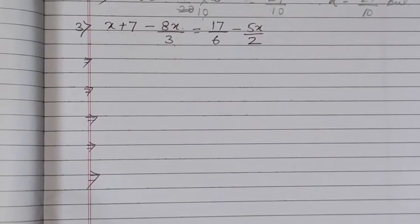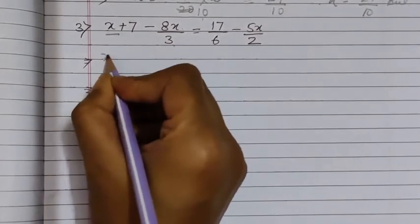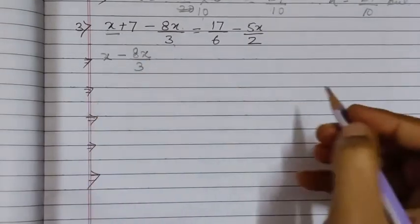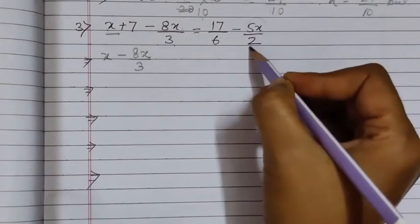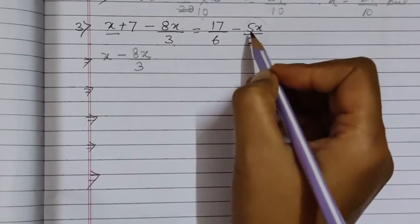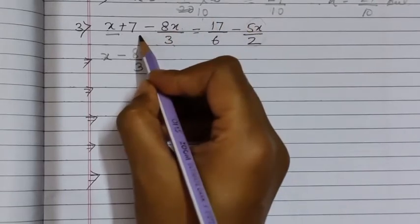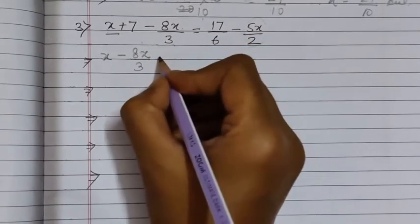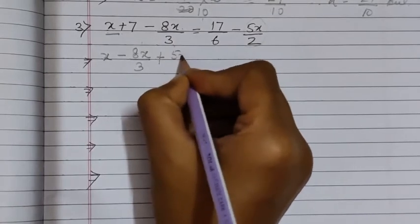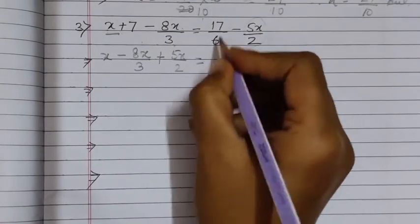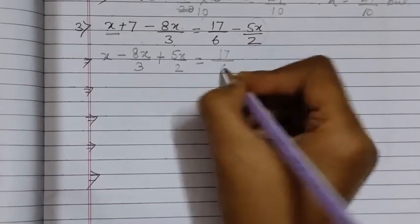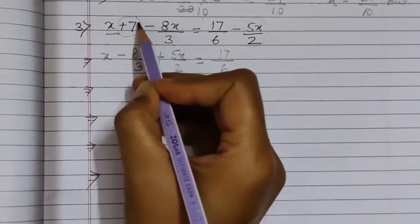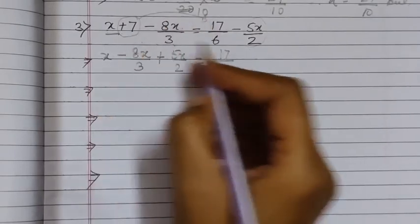On the LHS we have x minus 8x by 3. You see on RHS we have 5x by 2, so we will move this term to LHS and on moving this term it will become plus. So on the left hand side we will write plus 5x by 2, which is equal to 17 by 6. You see on the left hand side we are having plus 7, and when we will move it to the right hand side it will become minus 7.